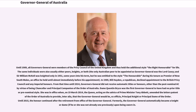From that time until 2014, Governors-General did not receive automatic titles or honours, other than the post-nominal AC by virtue of being Chancellor and Principal Companion of the Order of Australia. Dame Quentin Bryce was the first Governor-General to have had no prior title or pre-nominal style. She was in office when, on March 19, 2014, the Queen, acting on the advice of Prime Minister Tony Abbott, amended the letters patent of the Order of Australia to provide that the Governor-General would be, ex officio, Principal Knight or Principal Dame of the Order. Until 2015, the honour continued after the retirement from office of the Governor-General, and formerly the Governor-General automatically became a knight or dame upon being sworn in.